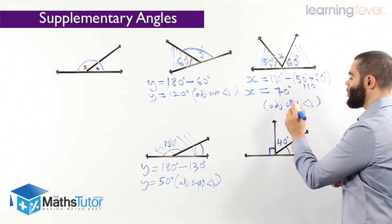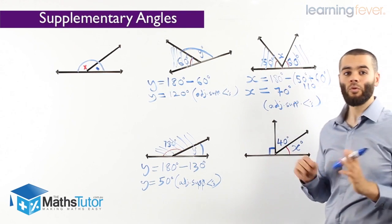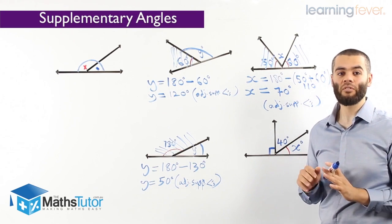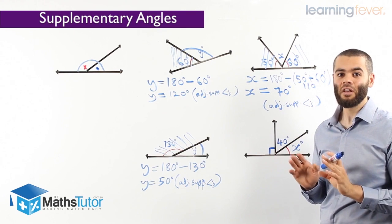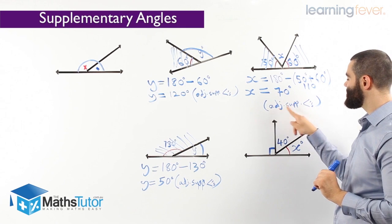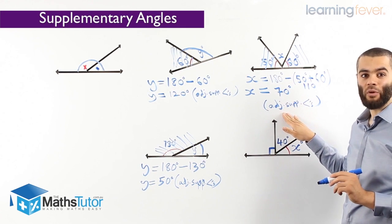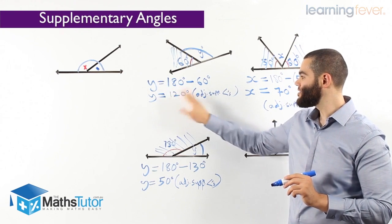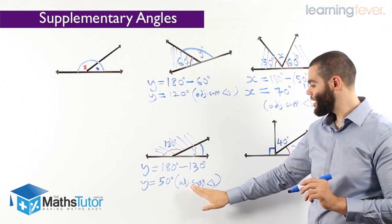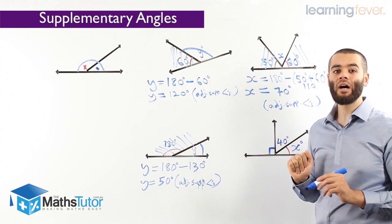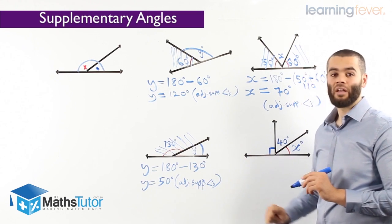We are giving the reason: x is 70 degrees, adjacent supplementary angles. Always give a reason, even if the question doesn't ask for it — just in case. We always write the value and the reason. We show the working out, we show the answer, and we show our reason. Working out, answer, and reason — very important to set it out correctly, and you'll get full marks for showing all working out, your answer, and your reason.